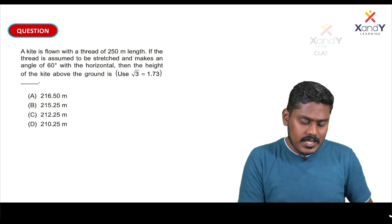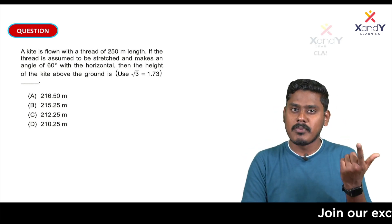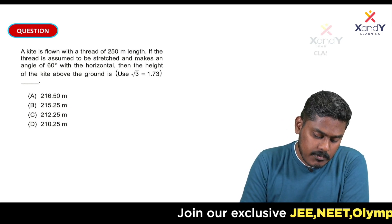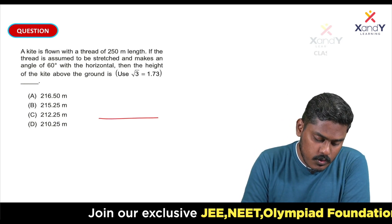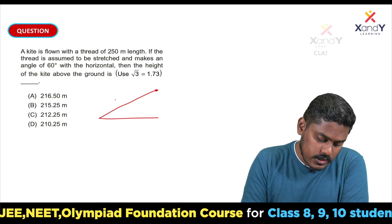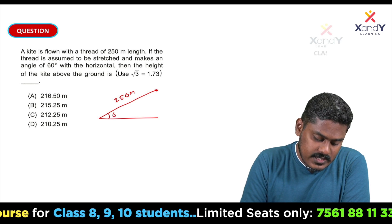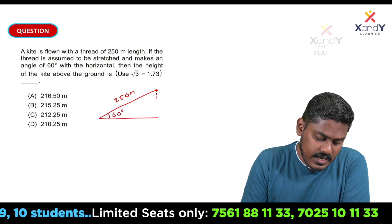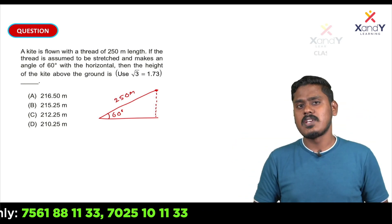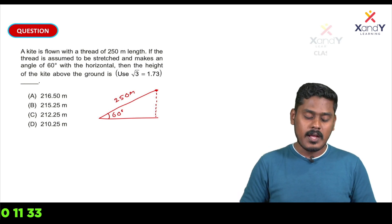Okay, now I am going to talk about trigonometry. I am going to take a ground, I am going to take a kite. The thread is 250 meter length, and the angle is 60 degrees. This is actually a simple question — the student will have an easy answer.